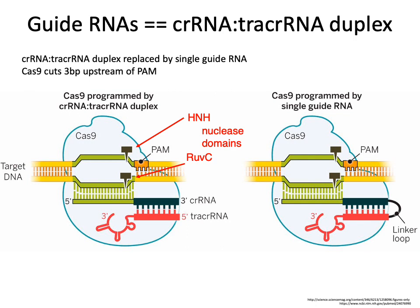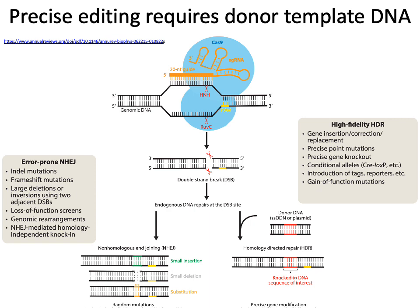The PAM sequence sits adjacent to where the two nuclease domains of Cas9 — HNH and RUVC — make their cuts. Once the double-stranded DNA break is induced by the nucleases, it must be repaired. There are two repair pathways typically used: the non-homologous end-joining (NHEJ) pathway and the homology-directed repair (HDR) pathway. Which one is used depends on whether or not a donor template is provided.